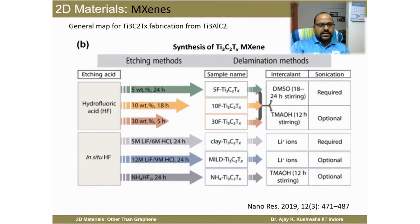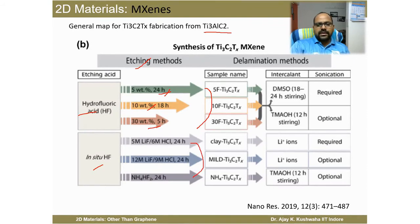A map in a Nano Research review paper summarizes the fabrication of Ti₃AlC₂ using different etching methods — such as HF etching or in-situ HF — along with parameters like concentration (e.g., 5 wt%, 38%) and duration (e.g., 24 hours), showing what kind of output is obtained. Intercalation and sonication parameters are also reviewed, providing a very comprehensive reference.